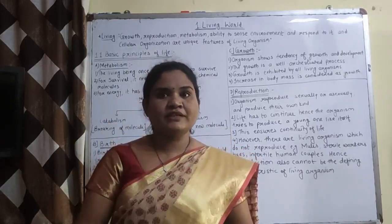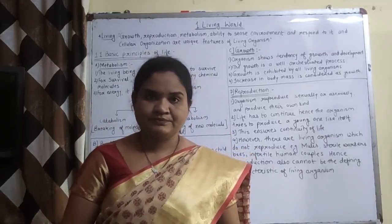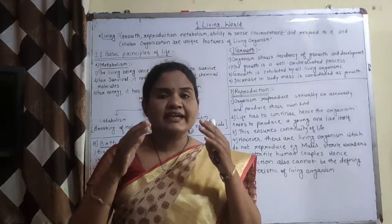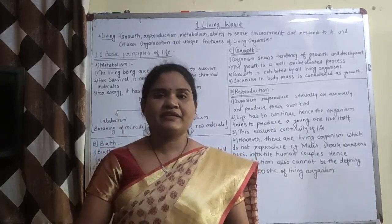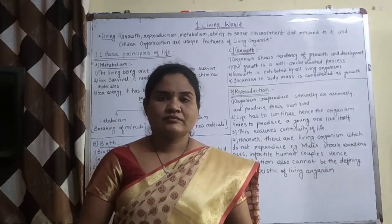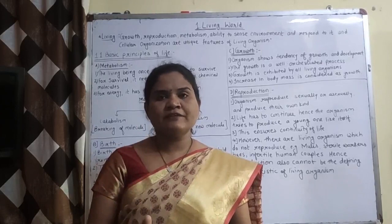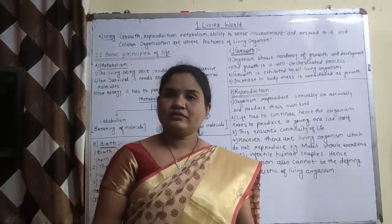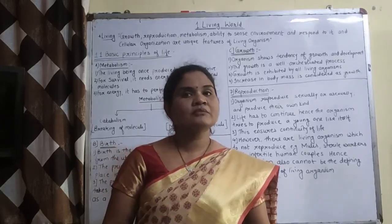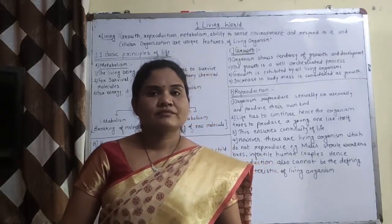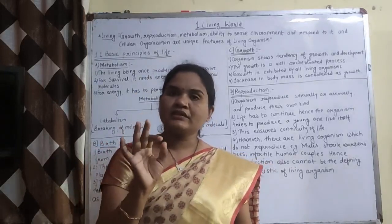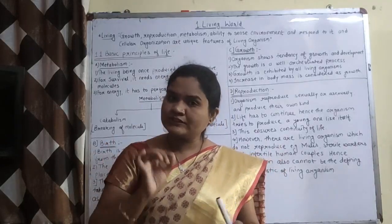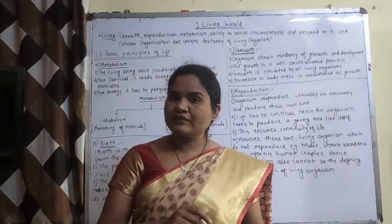Living — हमें पता है animal living है, plant living है। लेकिन ऐसा क्या है उनमें कि हम उनको living बोलते हैं? कोई सी characteristic है उनमें जो non-living में नहीं है। अगर हम animal और plant को living बोलते हैं तो non-living हम किसको बोलेंगे और क्यों? तो यहाँ पर छोटी सी concept है जो हम clear करेंगे।